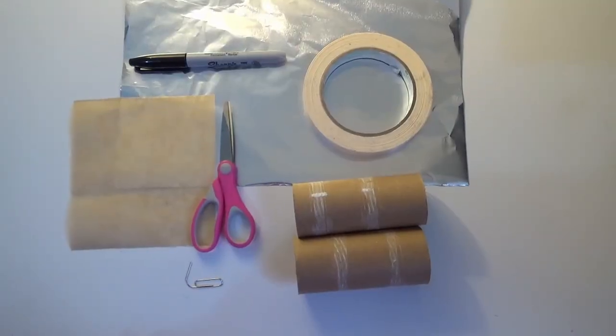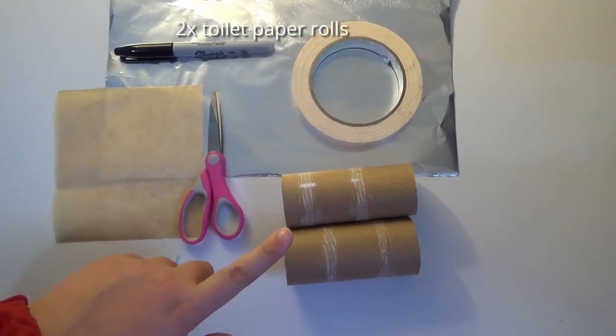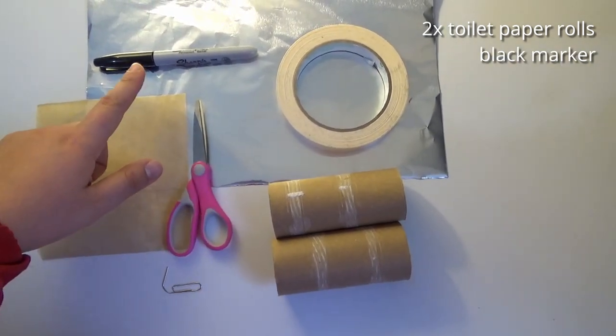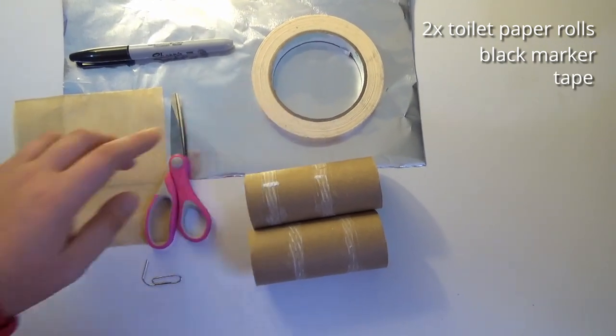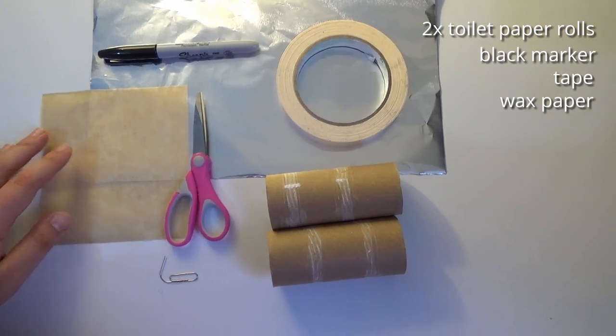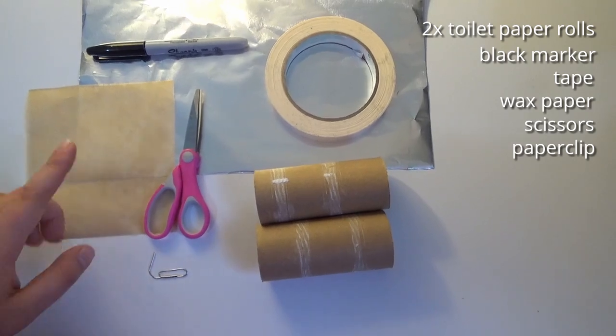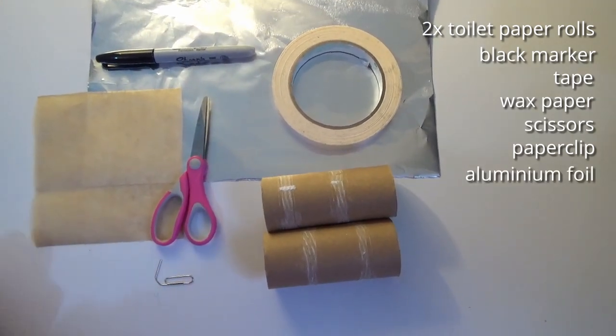I've created this pinhole camera out of everyday items I could find around my house, so here we have two toilet paper rolls, a black pen permanent marker or Sharpie, some masking tape or sticky tape, some wax paper, baking paper or tracing paper, a pair of scissors, a paper clip, and some aluminum foil. That's everything you'll need to make this camera today.